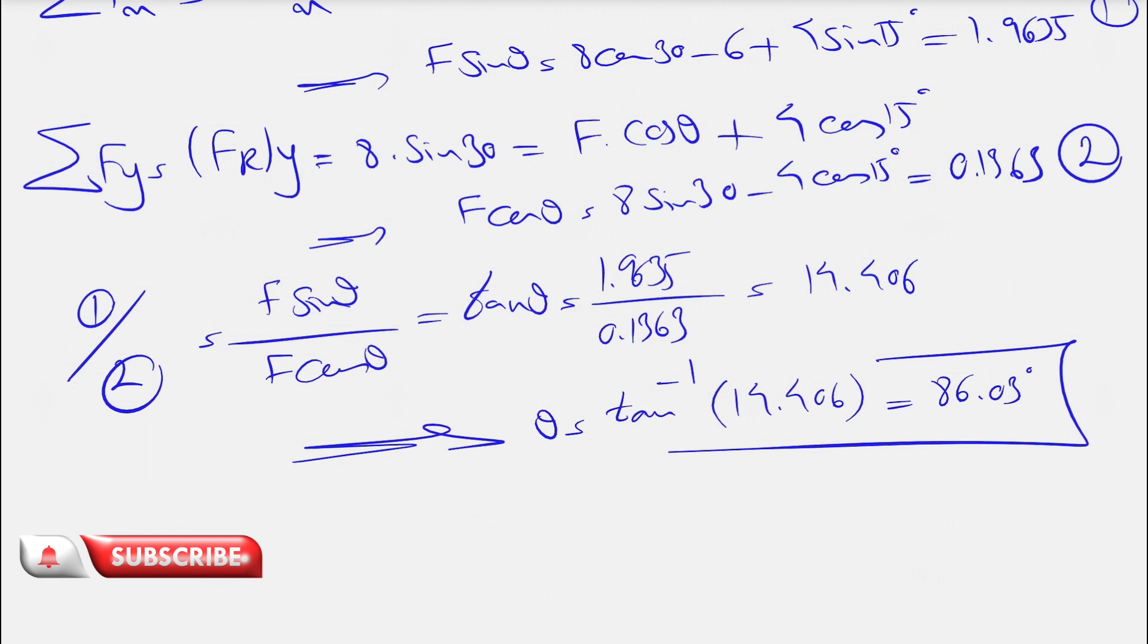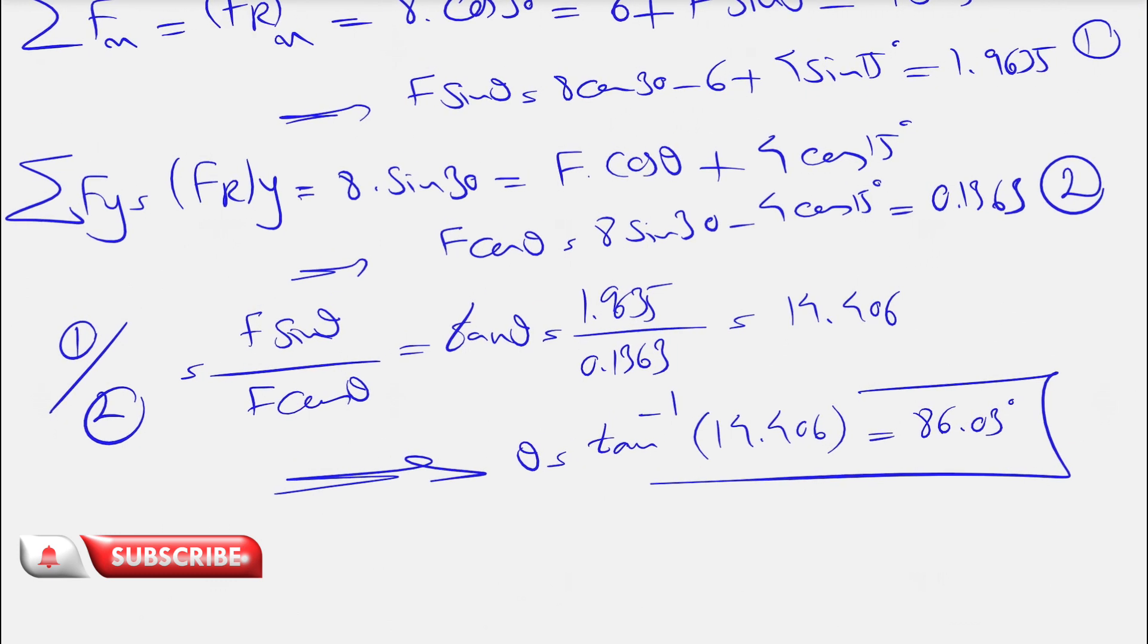And now that we have the theta, we just simply need to substitute the theta in either one or the second equation, and we can find the F, which is what the question is asking. So let's do the sine. So we'll have F sine of theta. So if we do from the first equation, we'll have F sine of 86.03 degrees equal to 1.9635.